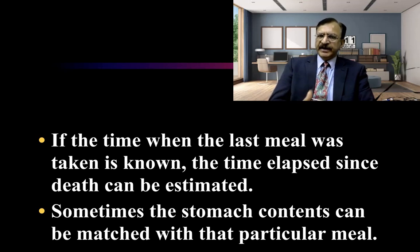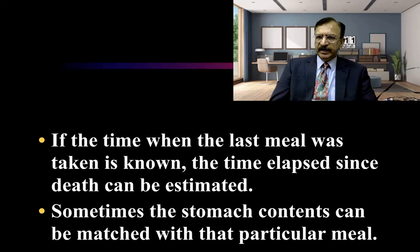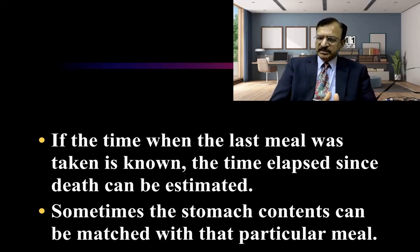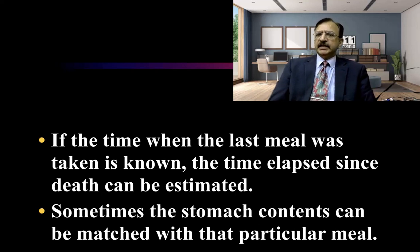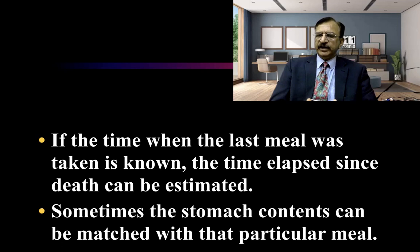For example, the autopsy surgeon writes that the stomach is full of contents or the stomach is empty. This finding is correlated with the circumstantial evidence or the scene of crime. In a case of murder, if someone claims that friends were sitting in a hotel having lunch when an attack occurred, then food must be found in the stomach. But if the doctor writes that the stomach is empty, it means the witness is telling a lie — either he was not present or they were not having a meal. This circumstantial and technical evidence is very important in relation to the crime scene.